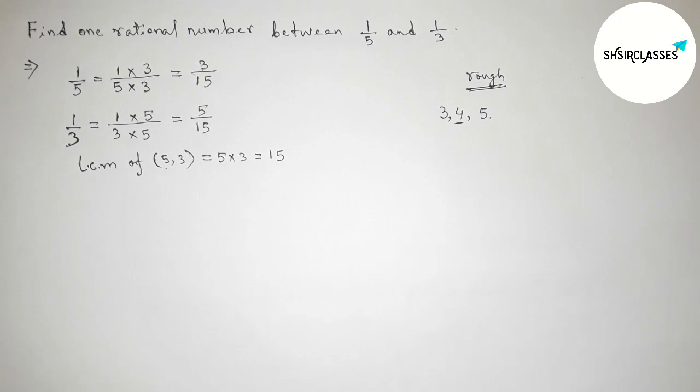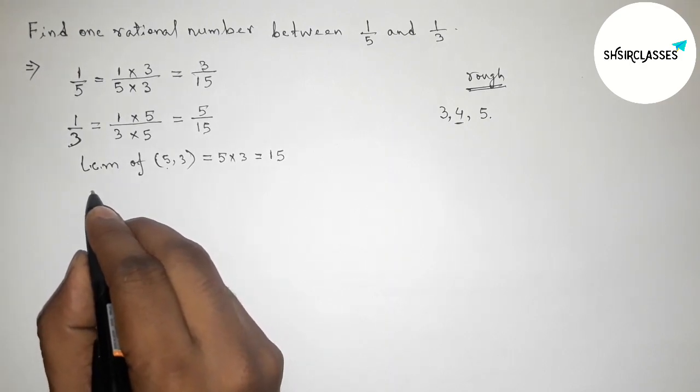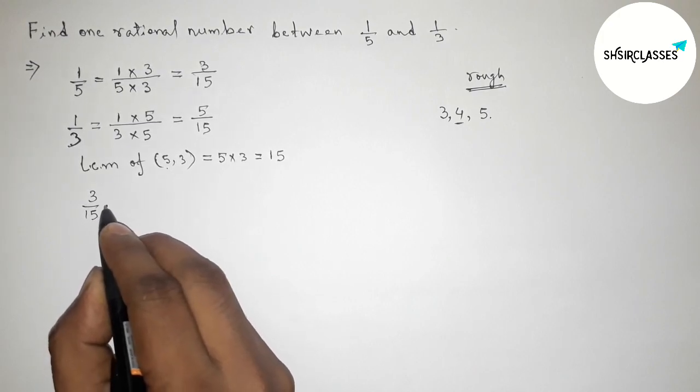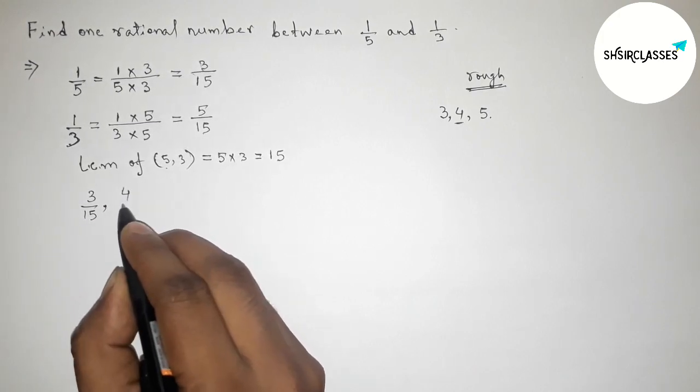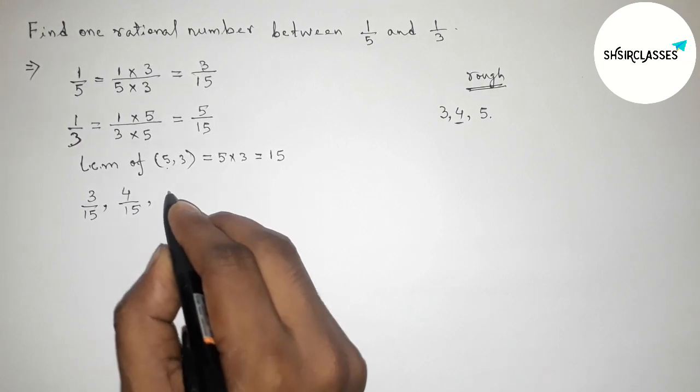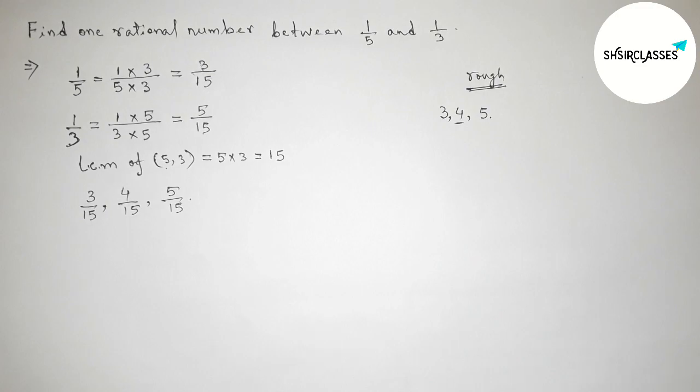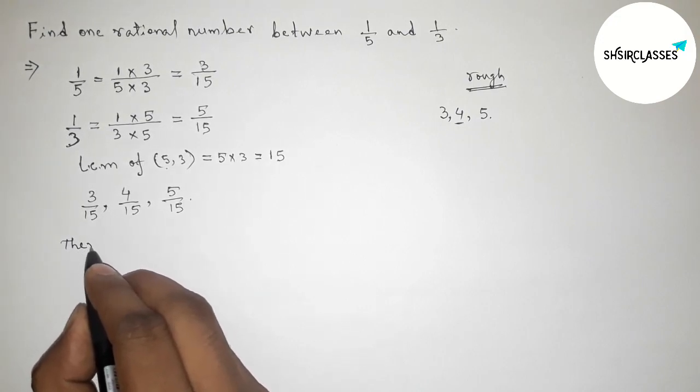First write down here all the rational numbers: 3/15, then 4/15, then 5/15. So between these two, 4/15 is the required rational number between 1/5 and 1/3.